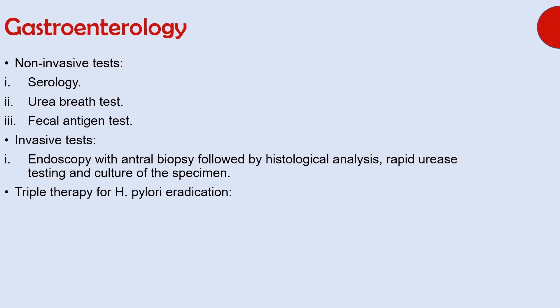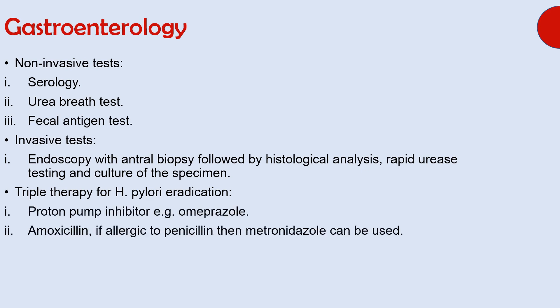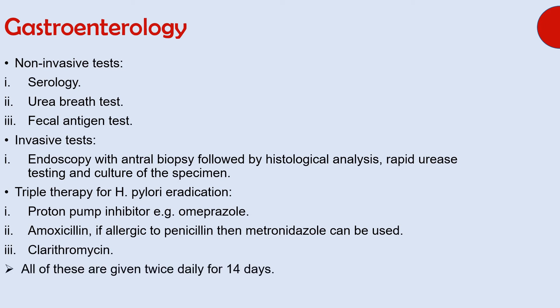The second part asked about triple therapy for eradication of H. pylori infection. Triple therapy includes a proton pump inhibitor (e.g., omeprazole), amoxicillin — or metronidazole if the patient is allergic to penicillins — and clarithromycin. All these drugs are given twice daily for 14 days. Quadruple therapy, discussed previously, is only used if this triple therapy fails to eradicate the infection.